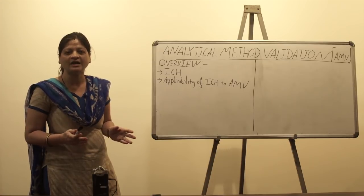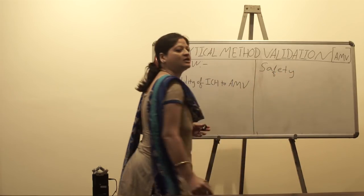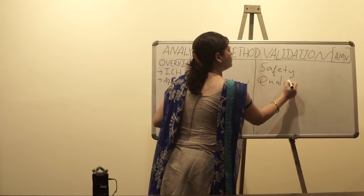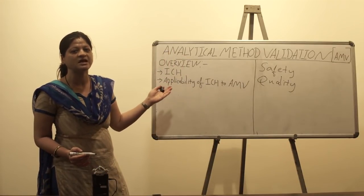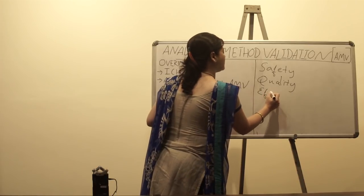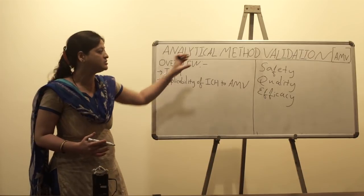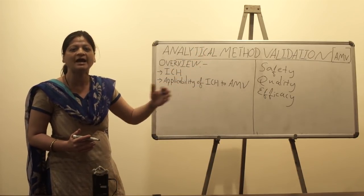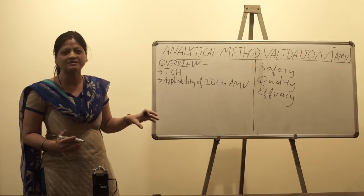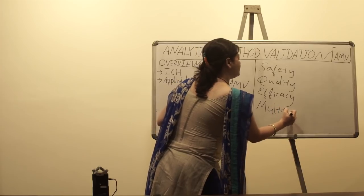The first set of guidelines ICH deals with are called the safety guidelines. The second set are the quality guidelines, majorly applicable to pharmaceuticals including both drug substances and drug products. The third are the efficacy guidelines. The fourth category, called multidisciplinary, covers technical documents that don't fall under the other three categories, such as guidelines for medical devices or electronic standards.